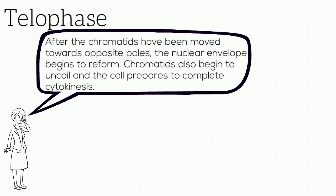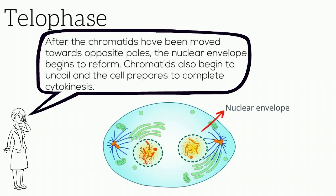During telophase, the chromatids have moved to opposite poles, and the nuclear envelope begins to reform. Chromatids also begin to uncoil, and the cell prepares to complete cytokinesis.